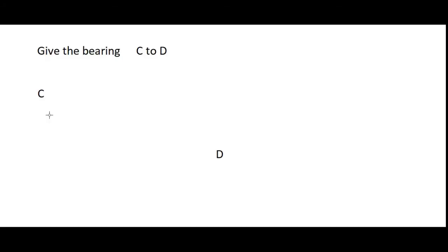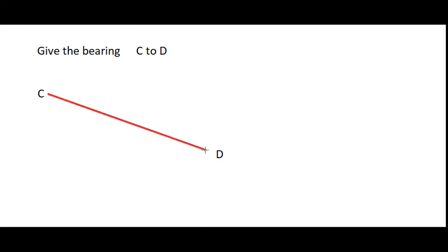For example, what we are going to do is we are going to give the bearing C to D. So our starting point here is C and the point we are trying to locate is D. So we start at C and we just come right over to D.